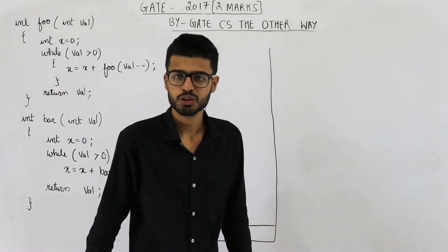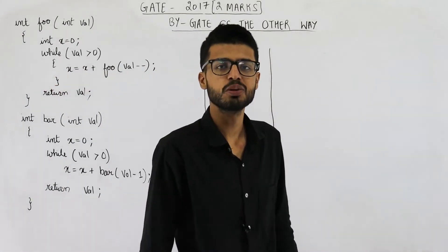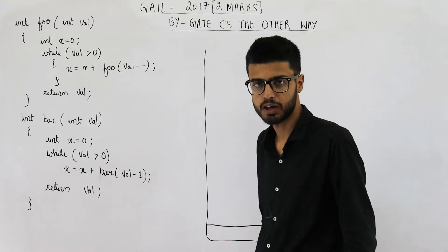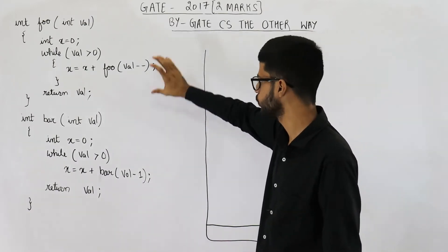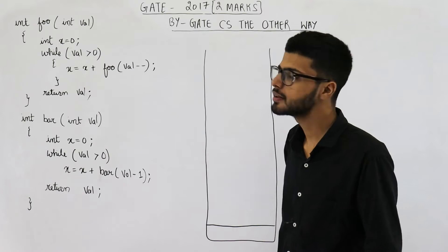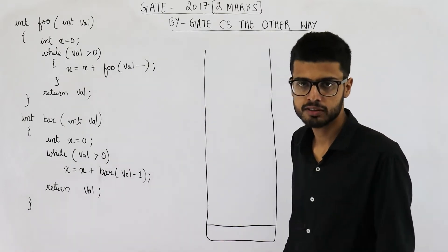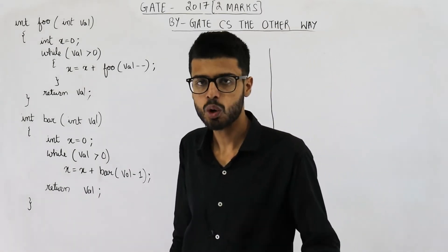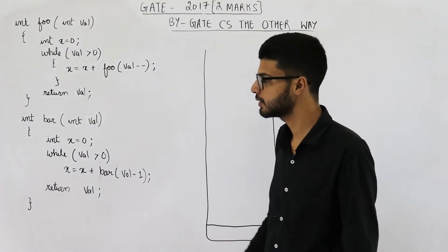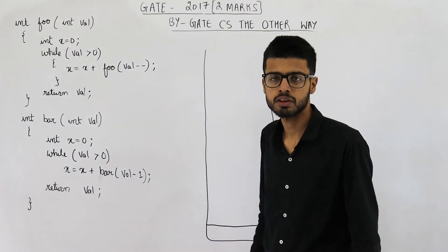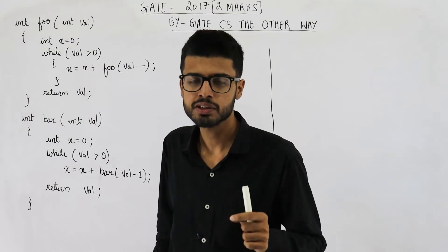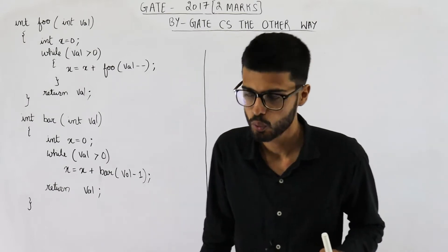Hello dear students, welcome back. This question is from the 2017 exam and it is also for two marks. They have given you these two functions named foo and bar. The question is, if you are calling these functions with three as parameter, what will happen in both cases? I'll display the image of this question. You can pause the video right now and have a look at the question as well as the four options.